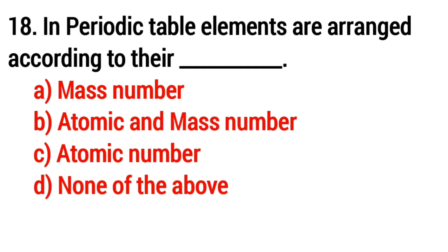Question number 18: In periodic table, elements are arranged according to their? Answer: option C, atomic number.